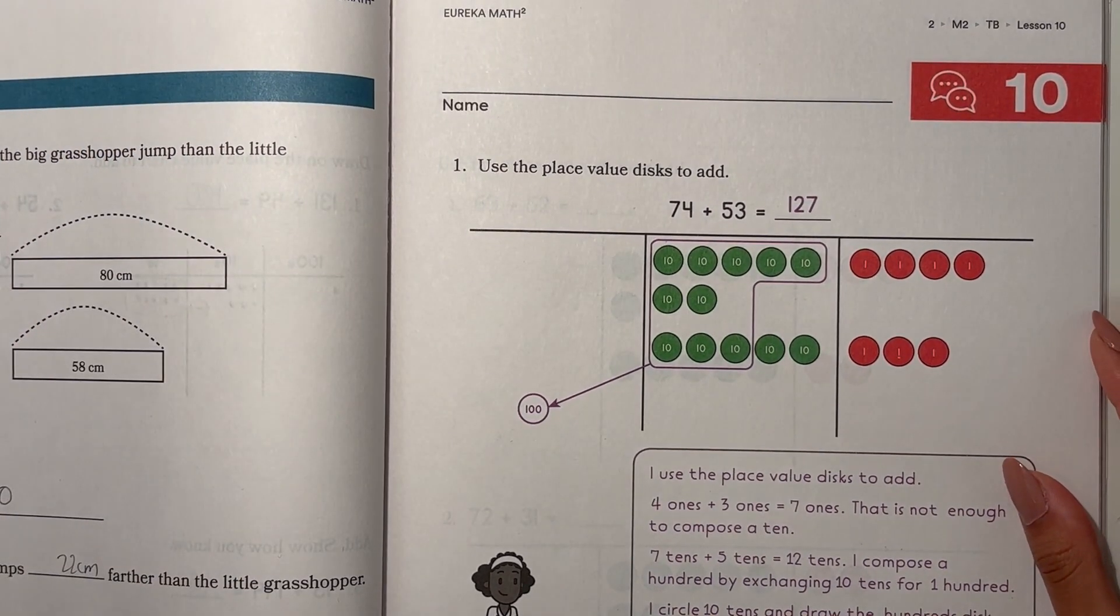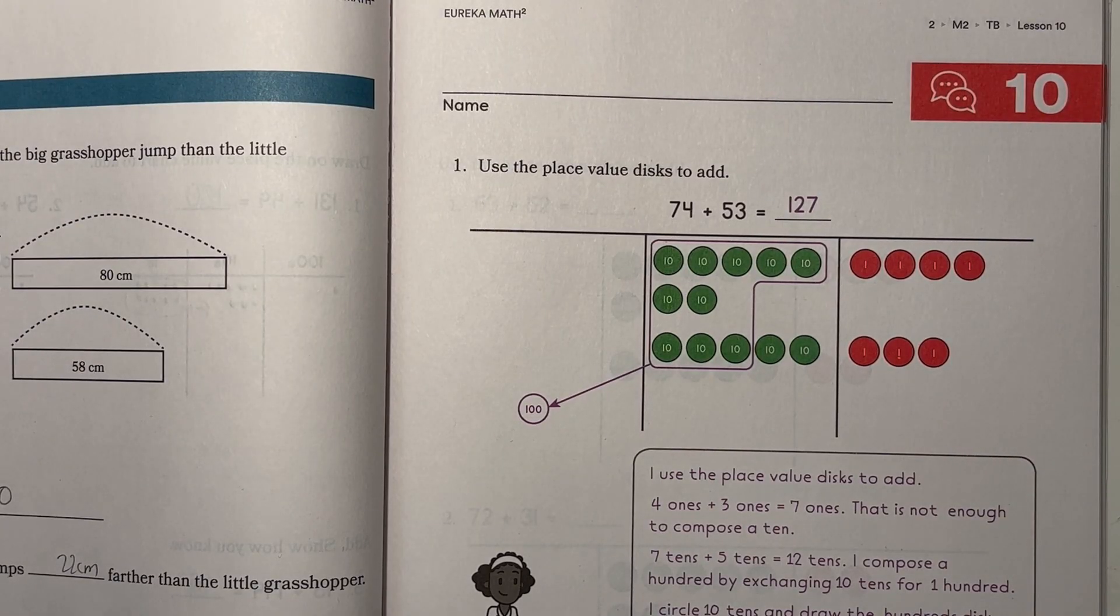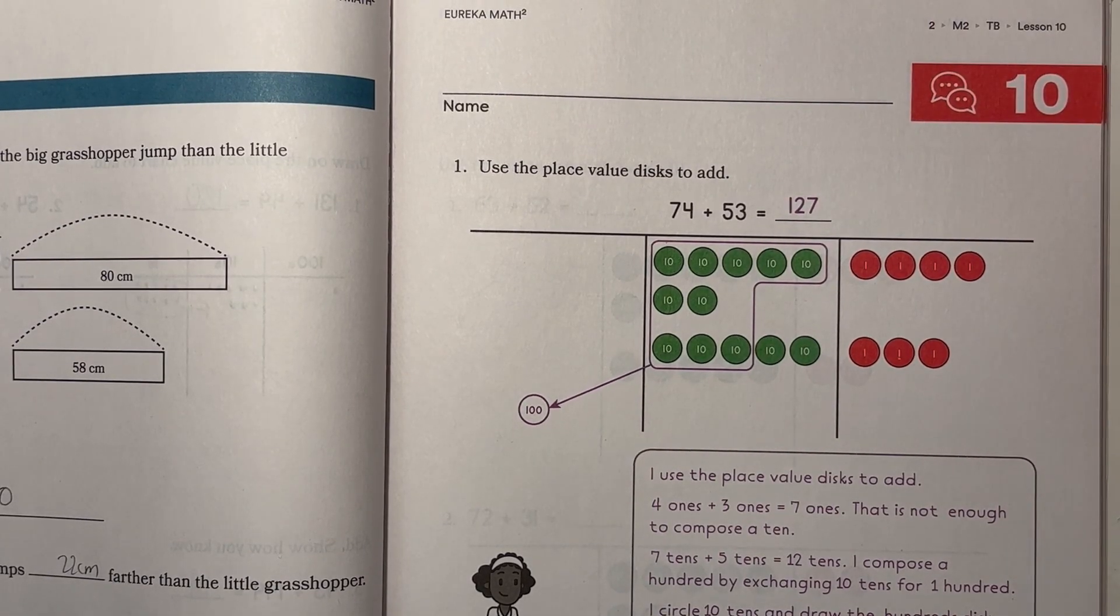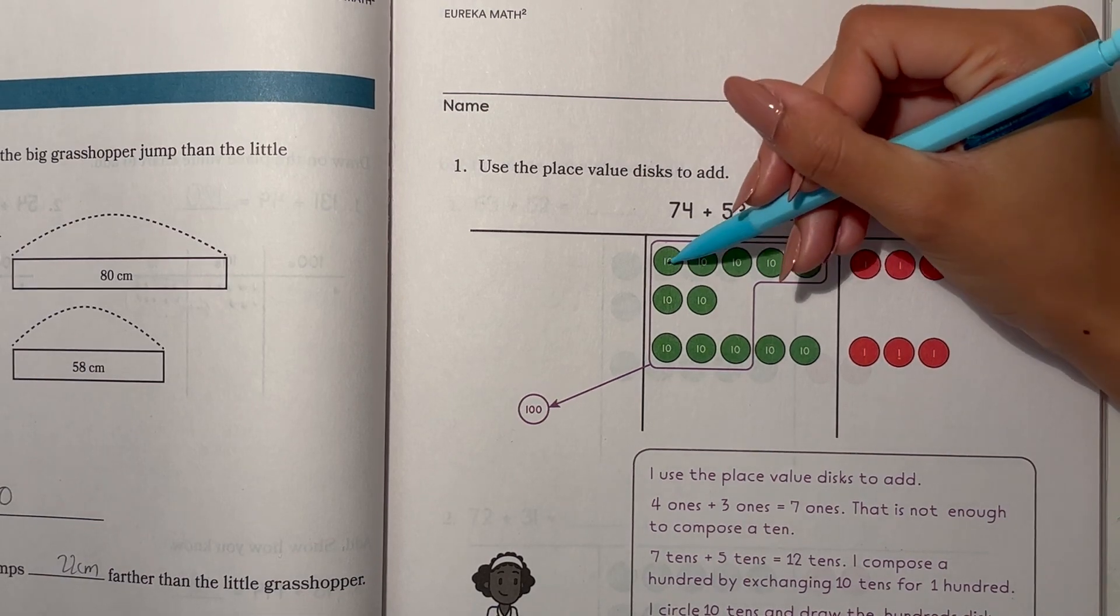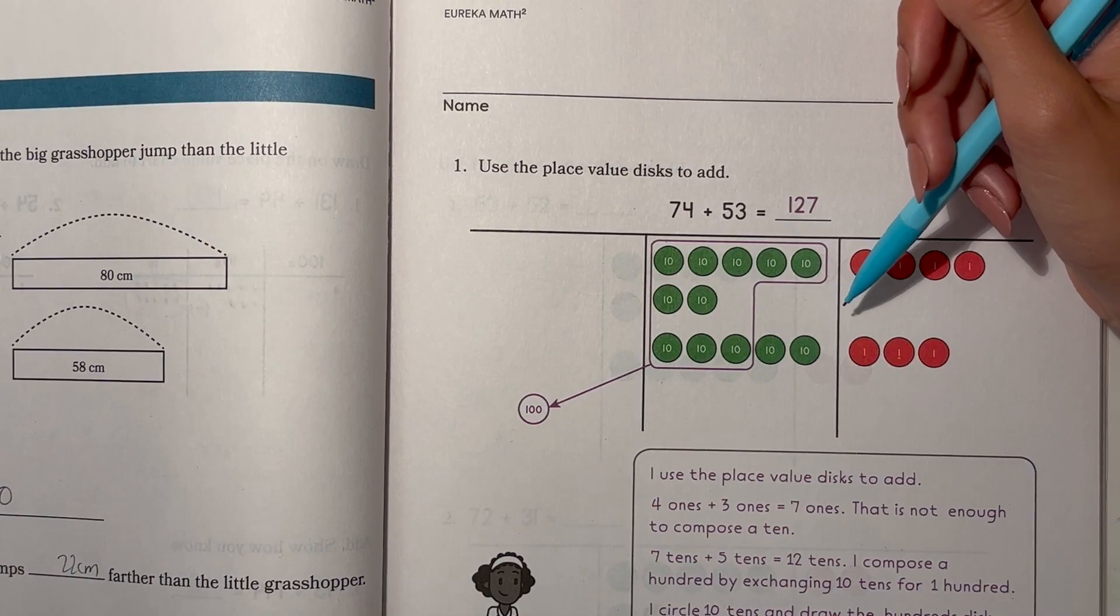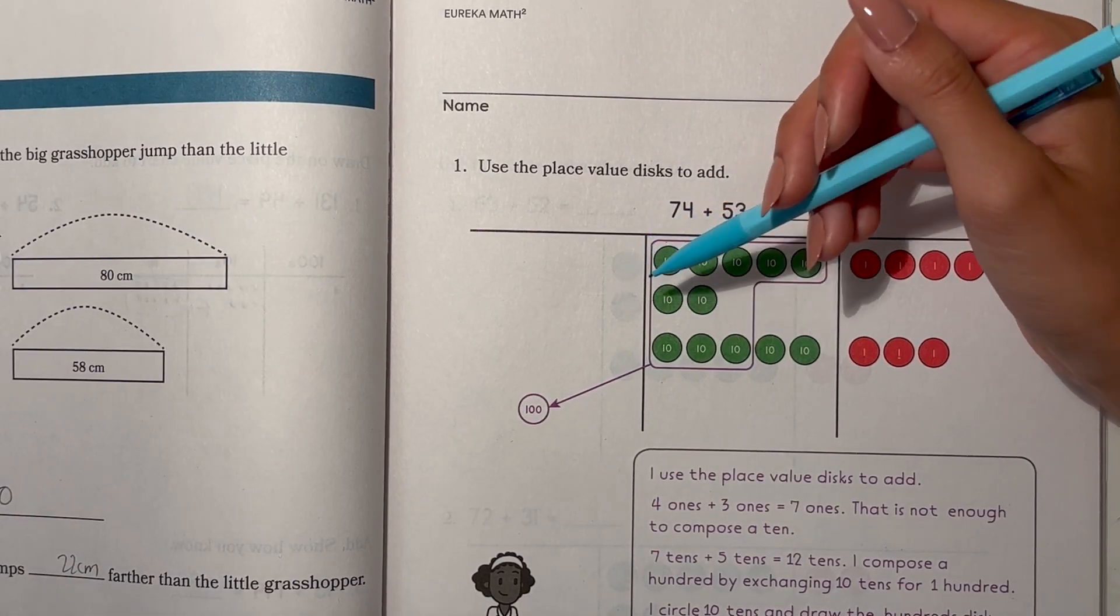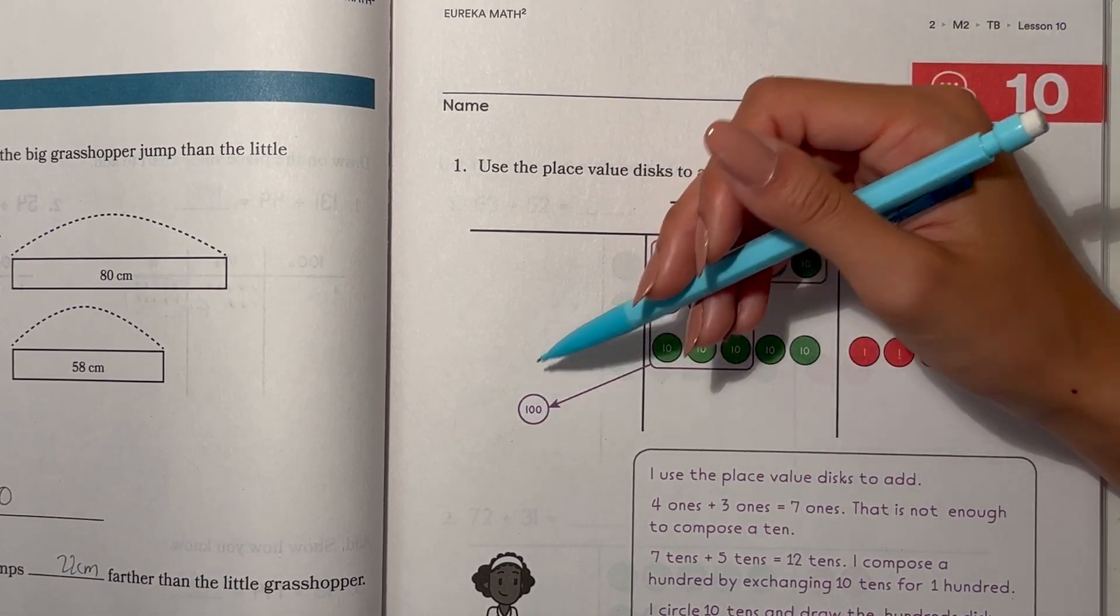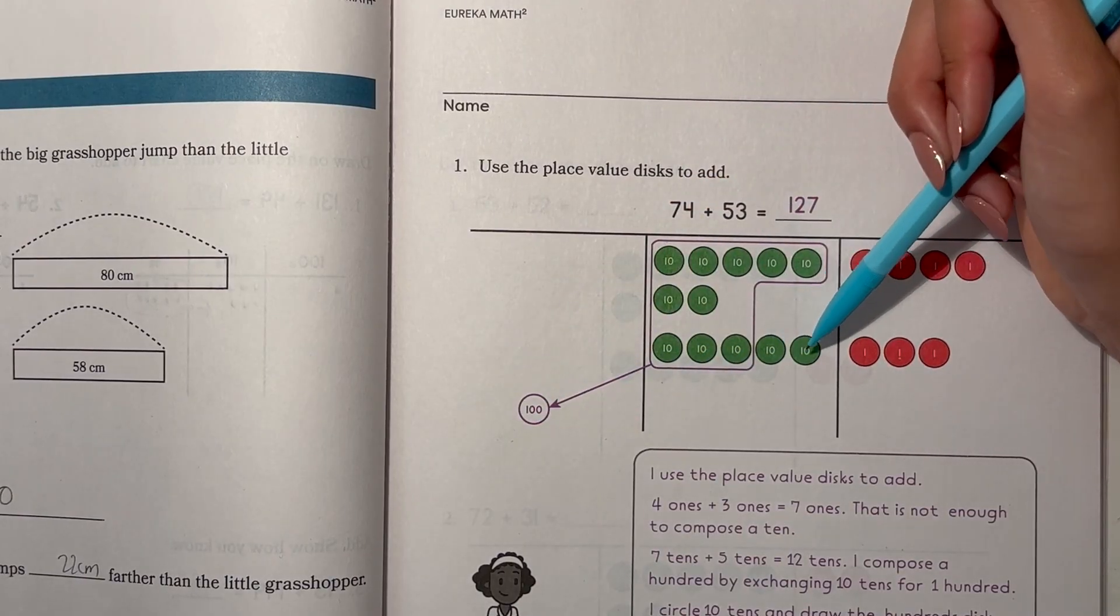Alright, Lesson 10, Explanation part. Number 1. Use the place value disks to add. 74 plus 53. So we don't need to regroup the ones here, but we do need to regroup the tens. 10 tens becomes 100. So your answer is 127.